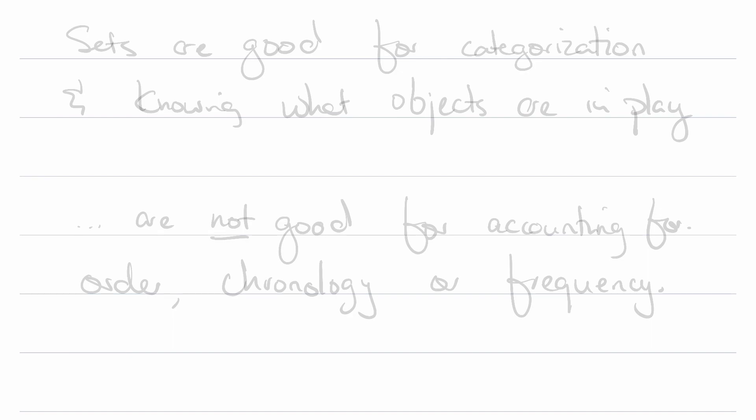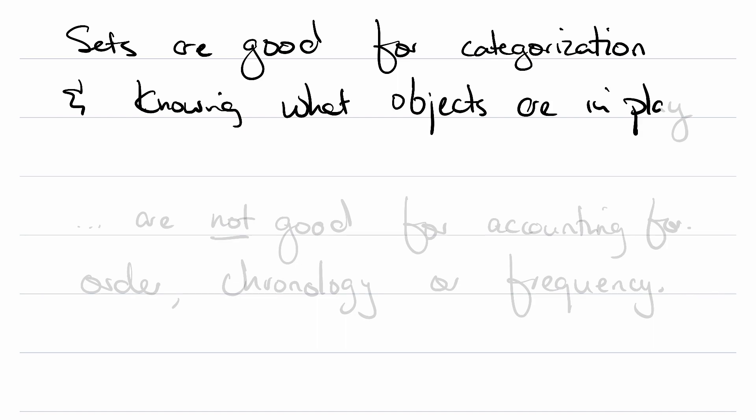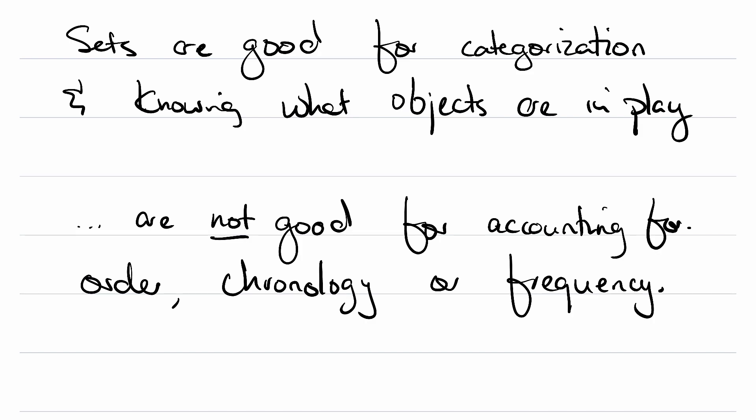So putting this all together, I want you to notice that sets are good for categorization and knowing what objects, what elements, are in play. But because of their characteristics, they are not good for taking into account chronology, order, or frequency. Sets are mathematical objects good for some things and bad for other things, so we have to make sure that we're careful about when we deploy them.